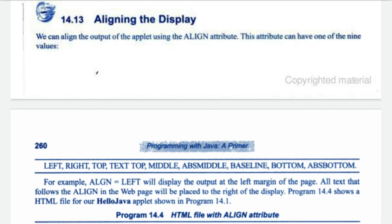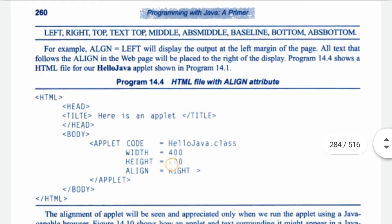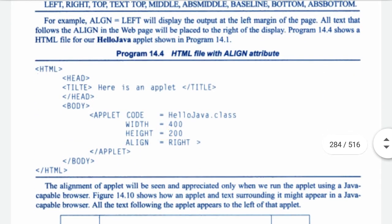The nine values are: left, right, top, text top, middle, abs middle, baseline, bottom, and abs bottom. For example, align equals left will display the output at the left margin of the page.